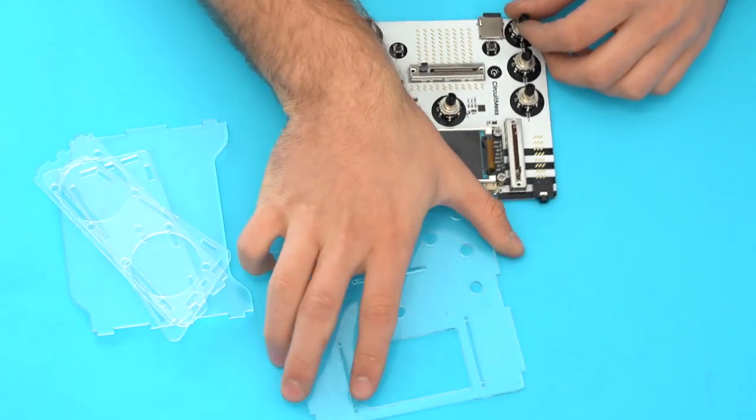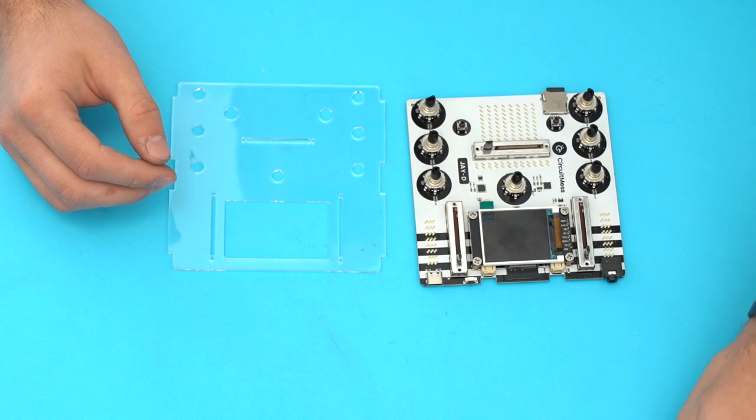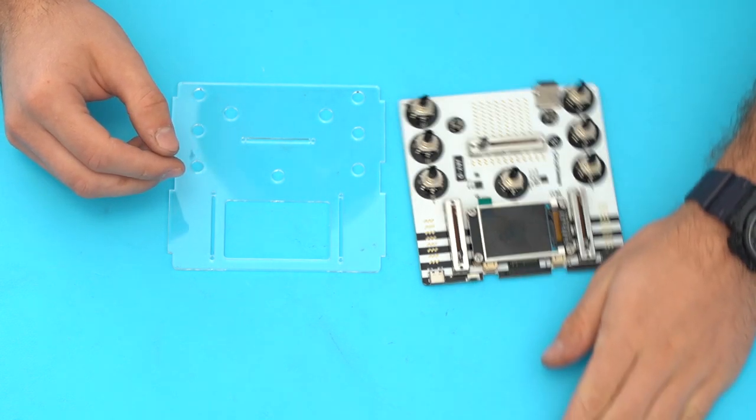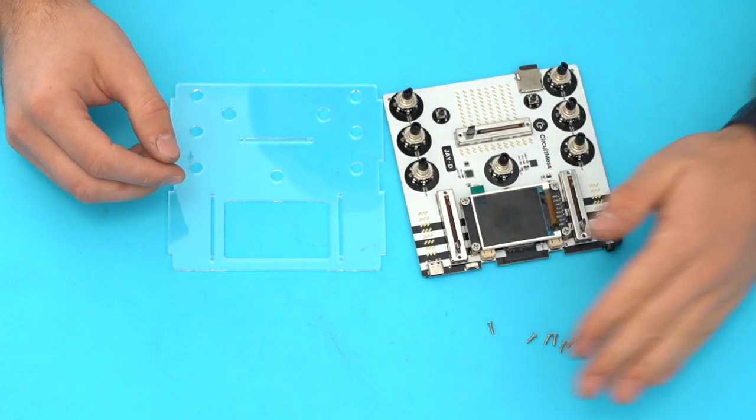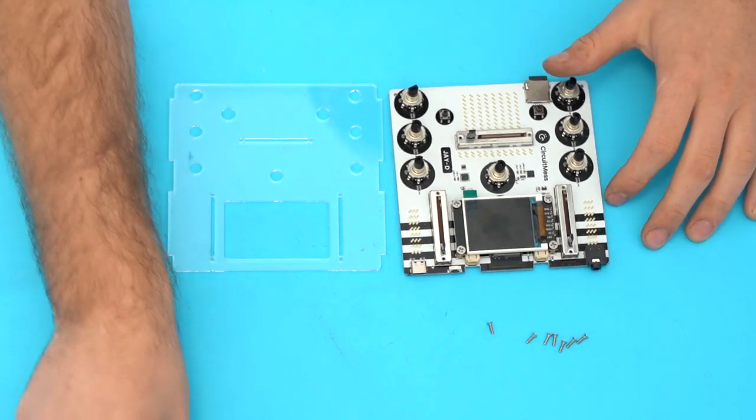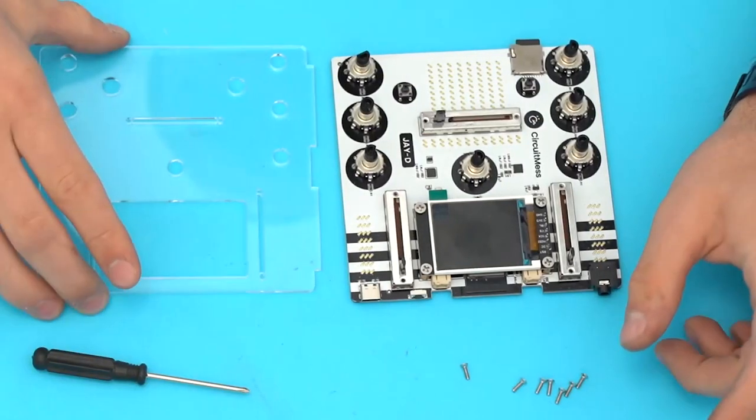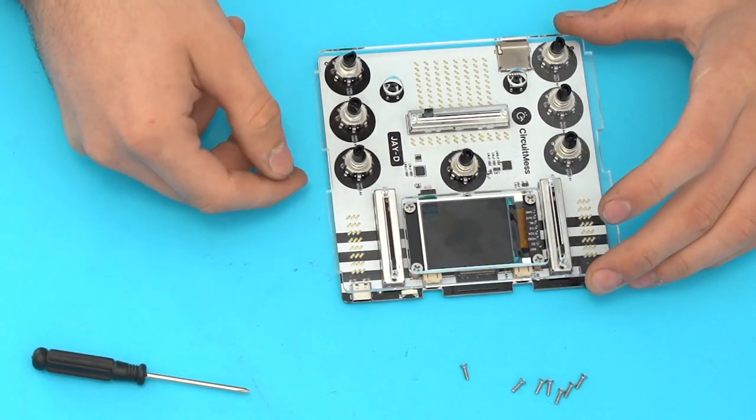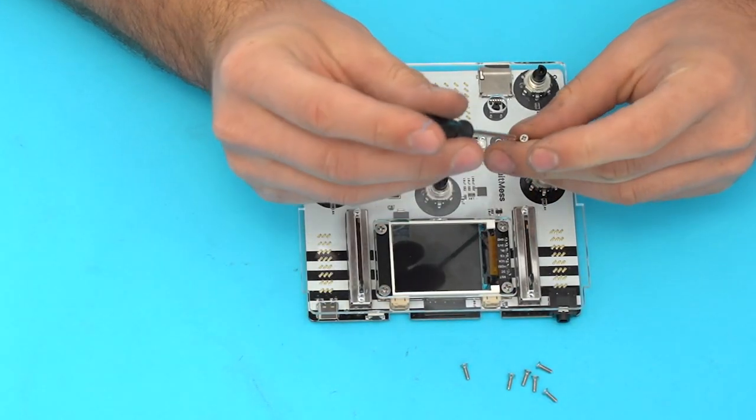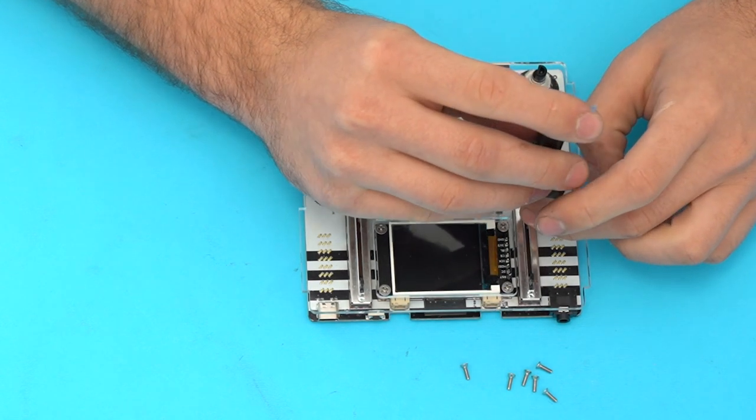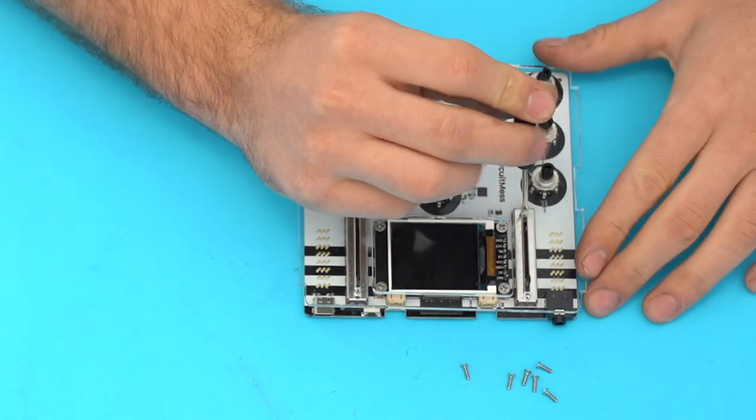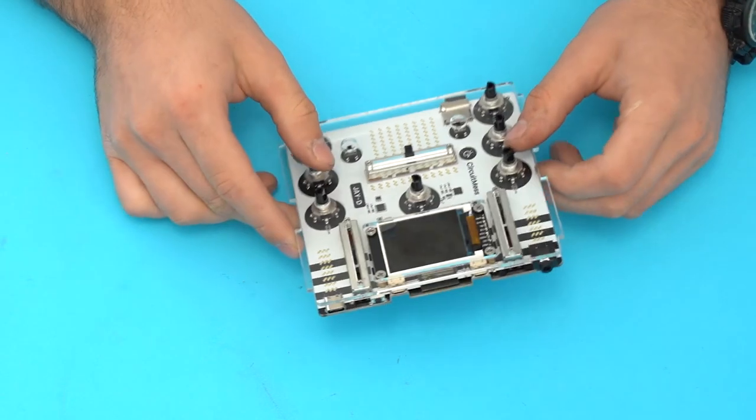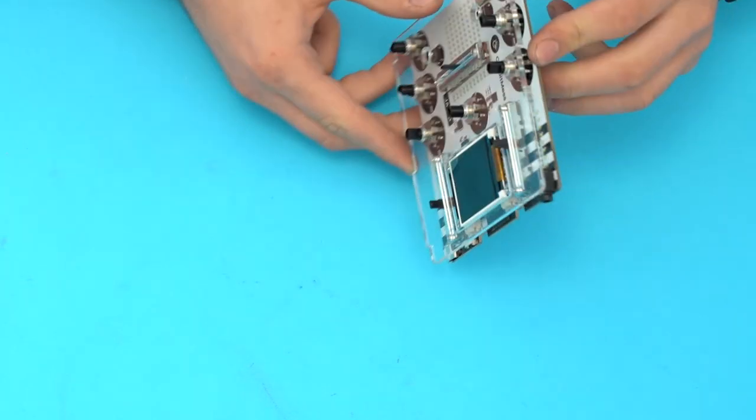Next, take the front casing plate and the main board. We're going to assemble the two with six small screws. We're also going to need the screwdriver for that. Place the casing plate on the main board and start tightening the screws. They should go into the three sliders we have soldered previously. After that, your JD should look something like this.